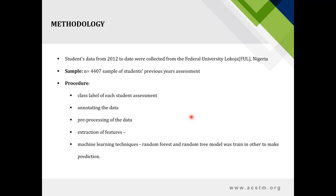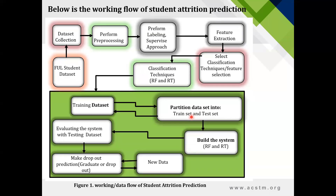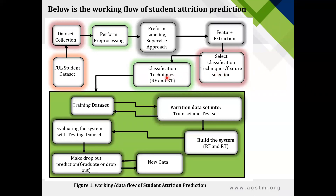Machine learning techniques such as Random Forest and Random Tree models were trained in order to make this prediction. Below is a working flow of student attrition prediction. From the first box, we have our student data set, which was collected, and preprocessing was performed. Labeling and supervised approach techniques were carried out to enable feature extraction and selection using our classification techniques — Random Forest (RF) and Random Tree (RT).